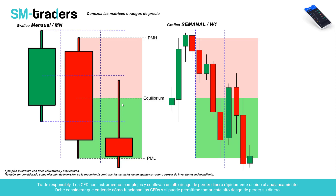Al siguiente mes, a pesar de que la vela cerró aquí, el precio puede manipular y buscar cotizarse lo más alto posible porque la tendencia es bajista; antes de irse a la baja van a tratar de subir el precio a lo más caro posible, inyectando liquidez y posiciones a una zona premium. Usando Fibonacci desde el mínimo hasta ese máximo, te va a dar una zona del 50%, y vas a ver que esto se relaciona con el 61.8, 75 y 79%. Estos niveles no son mágicos, sino que corresponden a las zonas de premium y discount dentro de una matriz.